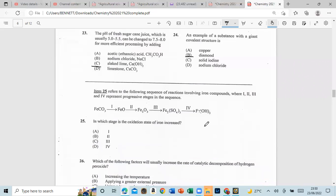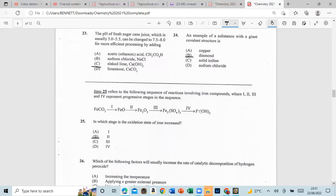Number 25, the sequence of reactions involving iron compounds, where 1, 2, 3, and 4 represent progressive stages in the sequence. In which stage is the oxidation state of iron increased? Is it 1, 2, 3, or 4? And that's 2. So that gives us 3.